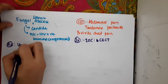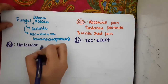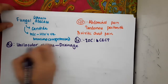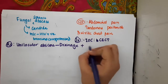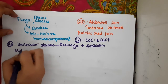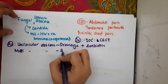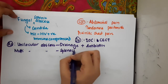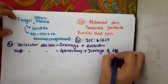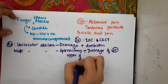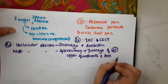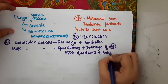For treatment, unilocular abscess is managed with drainage and antibiotics. Multilocular abscess is managed with splenectomy along with drainage of the left upper quadrant and antibiotics.